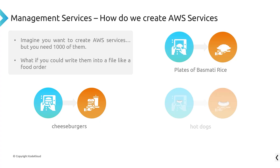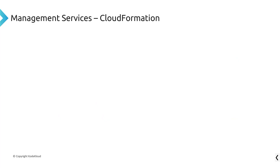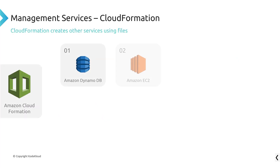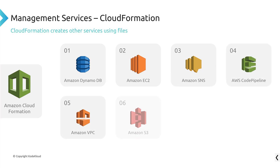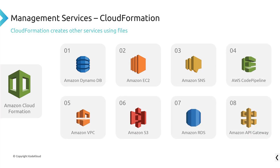Maybe it's plates of basmati rice or hot dogs — the point is, what if you could just write your order down into a file, give it to AWS, and have them create that? There's a service for that — it's called CloudFormation. CloudFormation creates other services using files that you give it. You see CloudFormation on the left, that's the green icon, and all of these services on the right-hand side — put them all into a flat file and feed it to CloudFormation.